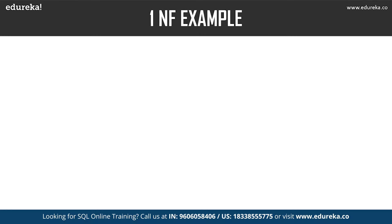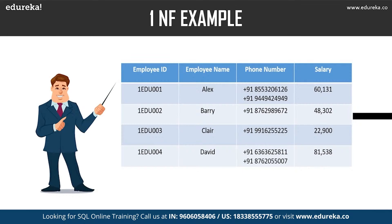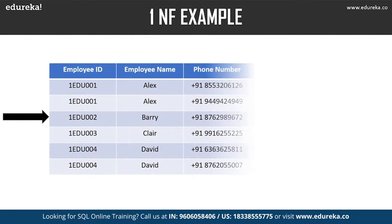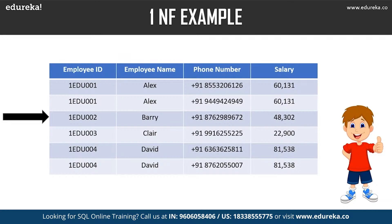To understand this better, let's look at the given table. In the employee table we have employee ID, employee name, phone number, and salary as columns. We can clearly see that the phone number column has two values, thus violating the first normal form. After applying first normal form, each and every row is distinct — no cell has multiple values. The table has achieved atomicity, and there are no multiple values in any column.